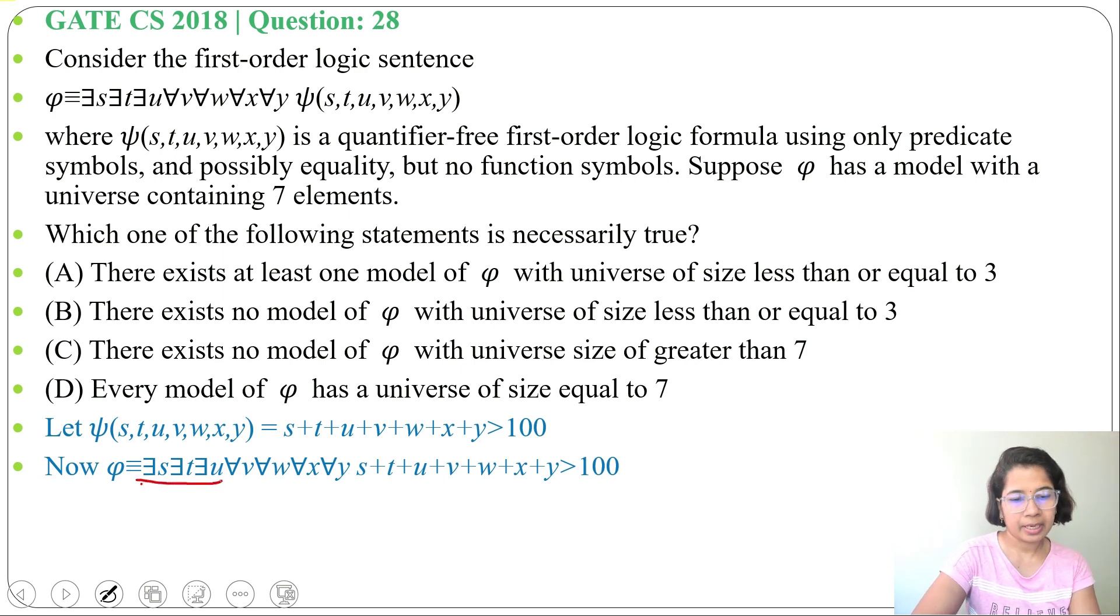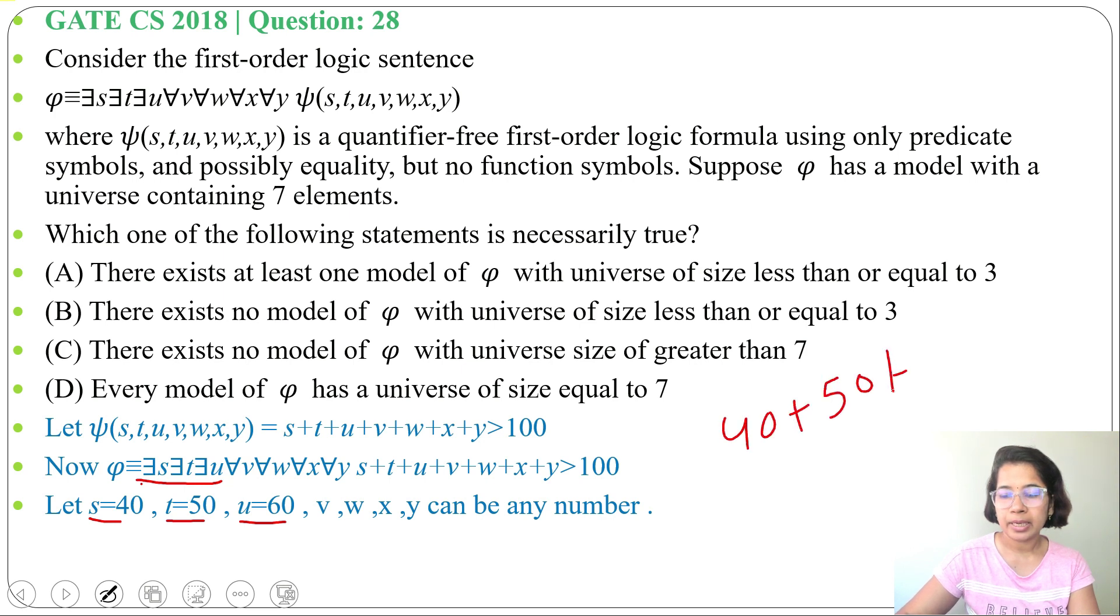So these three are limited: s,t,u. Let me take s equals 40, t equals 50, and u equals 60. When s,t,u are 40, 50, 60, then their sum will be 40+50+60, which is 150.